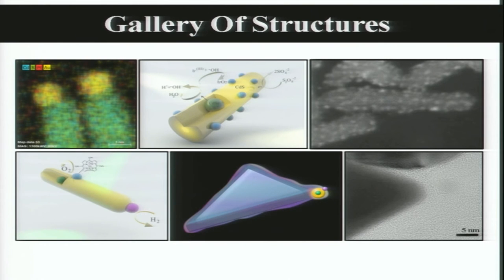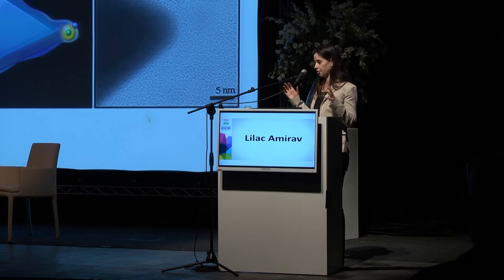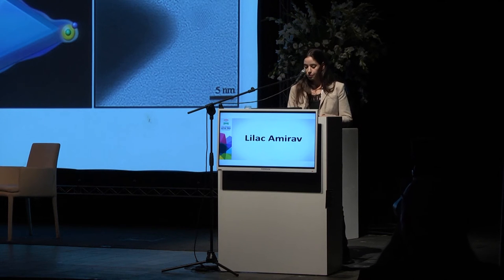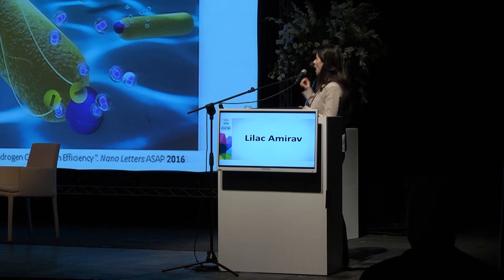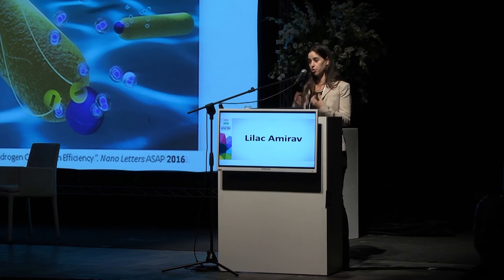Not only do we have control over the different building blocks, but we actually make something with them. We combine them together and control the composition, size, shape, and also the overall morphology — how they connect to each other. I'm going to focus on this structure: two different semiconductors, a tiny seed of cadmium selenide embedded in a rod of cadmium sulfide. With these two semiconductors, the holes — the positive charges — go into the seed and are localized there, while the electrons are delocalized, moving along the rod and then going into the platinum tip. We now have charge separation over three different materials, with reaction sites physically separated from each other.